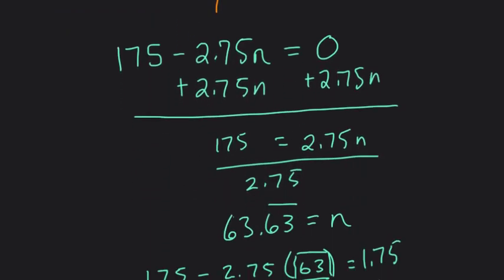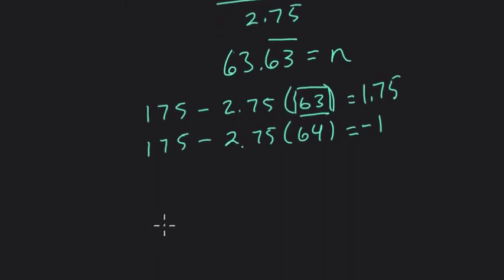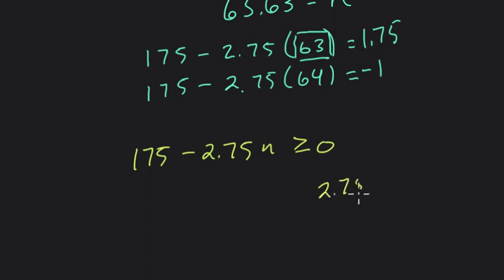You could have also used inequalities to solve this. I found when it equals 0 and then interpreted that statement. We could have also said, when does her equation, $175 minus $2.75 times n, when does that, or for what n values will that be greater than or equal to 0? So here, if we solve that one, we add $2.75n to both sides. We divide it by $2.75, just like we did before. And then we get this statement. So this would mean, when n is less than or equal to 63.63 repeating. In other words, you can only have whole weeks. When n is less than or equal to 63 weeks, she'll have money on her card.